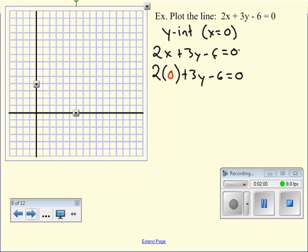And I'm just going to rearrange and solve. So bring the 6 over the other side. 3y is equal to 6. Divide both sides by 3. And I get my y-intercept at 2, or positive 2. So my y-intercept will be 0, 2.